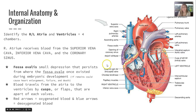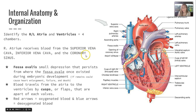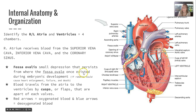Looking inside the heart's anatomy, you need to identify the right and left atrium and ventricles. The right atrium receives blood from the superior vena cava, the inferior vena cava, and the coronary sinus. The fossa ovalis is a small depression persisting from the fossa ovale during embryonic development — if this remains open, it could cause heart enlargement, failure, and death if not detected and surgically repaired.